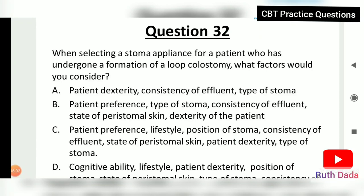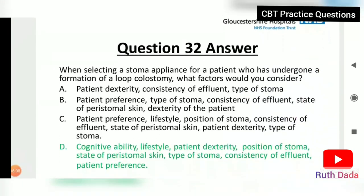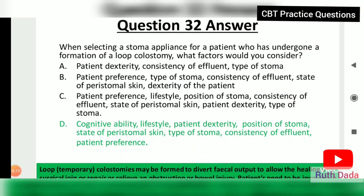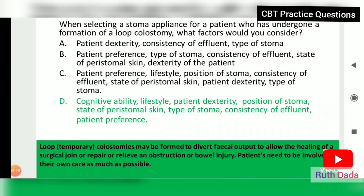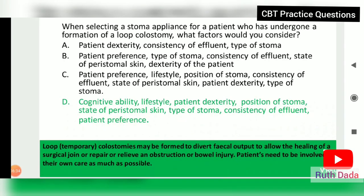Question 32: When selecting a stoma appliance for a patient who has undergone formation of a loop colostomy, what factors would you consider? Factors include cognitive ability, lifestyle, patient dexterity, position of stoma, state of peristomal skin, type of stoma, consistency of effluent, and patient preference. A loop colostomy may be formed to divert fecal output to allow healing of a surgical joint or to relieve a bowel obstruction.